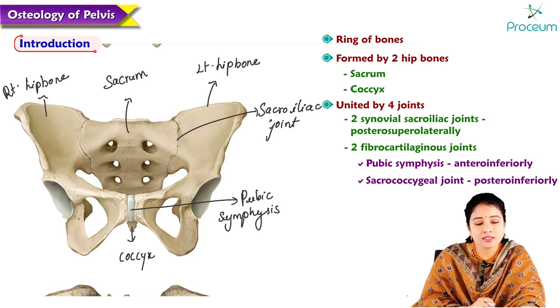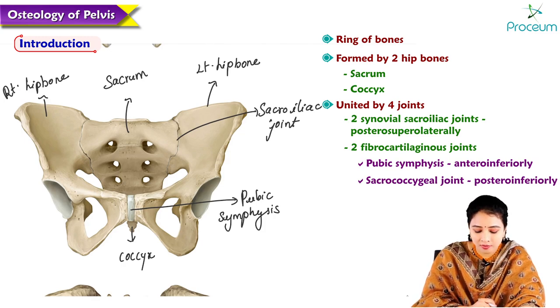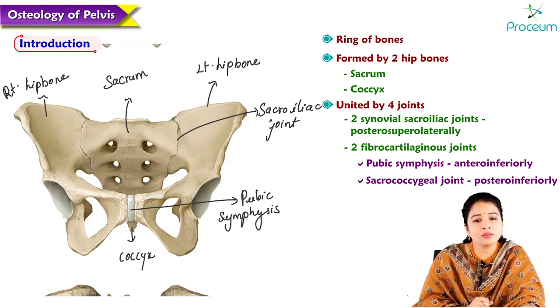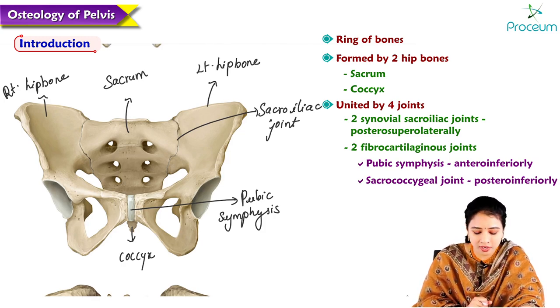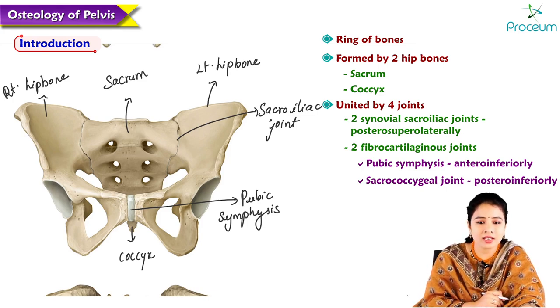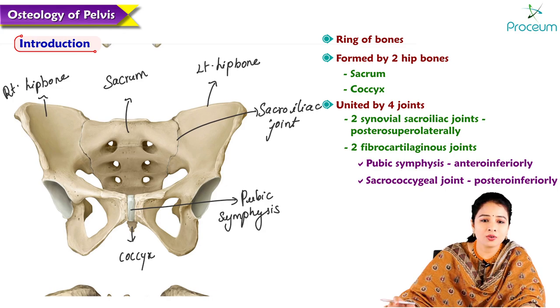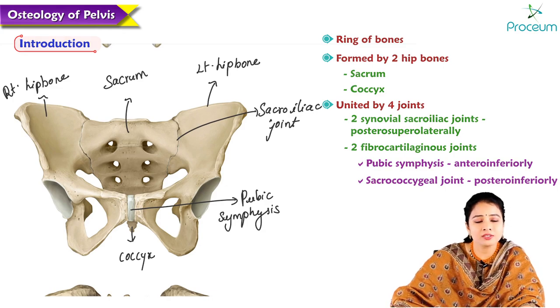The other fibrocartilaginous joint is the sacrococcygeal joint, where the coccyx articulates with the sacrum posteriorly and inferiorly.